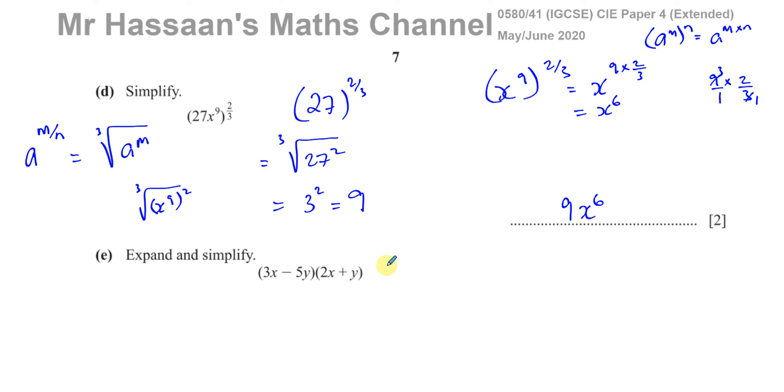Then part E says expand and simplify. So we need to take these brackets (3x - 5y)(2x + y) and expand them, then simplify the answer. So we're going to have 3X times 2X which is 6X squared, and 3X times Y which is 3XY, minus 5Y times 2X which is minus 10XY. Some people would write YX, but I like to keep it in alphabetical order so we can spot like terms. And then minus 5Y times plus Y which is minus 5Y squared. Just be careful of the signs.